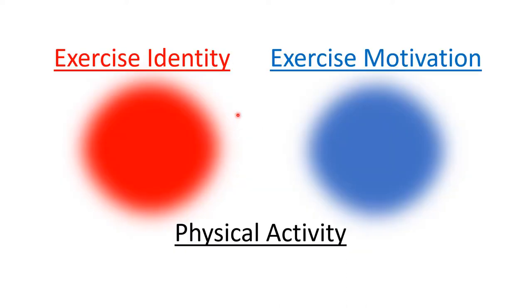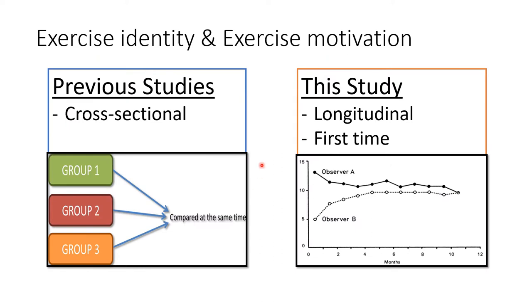The article talks about two types of ways people identify with exercising: exercise identity and exercise motivation. There's a lot of literature on both of these topics suggesting that both of them in combination can really increase physical activity amongst individuals. Currently, the literature has been purely cross-sectional on this phenomenon, looking at groups and comparing them at the same time. The selling feature of the article I'm reviewing is that it's one of the first times it's being used in a longitudinal style, looking at how exercise identity and motivation can change over time.